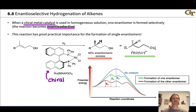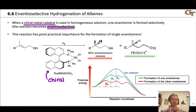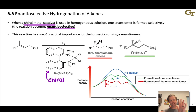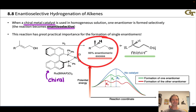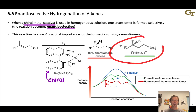Enantioselective hydrogenation is a highly attractive and well-developed methodology for generating single enantiomers with very high selectivity. The basic idea is that we use a single enantiomer of a chiral catalyst, which acts like a single hand — selecting for a particular hand of product, just as your left hand selectively picks up the left-hand glove. The chiral catalyst selects for a single enantiomer of product, with little to none of the minor enantiomer, assuming we have a good chiral catalyst.